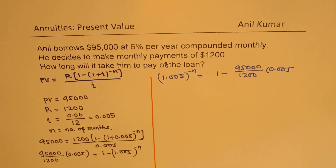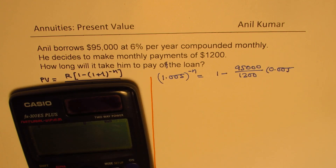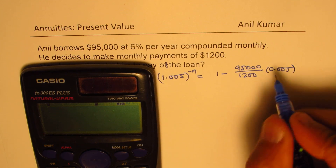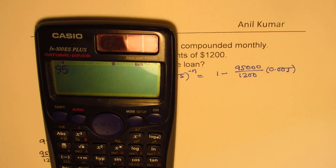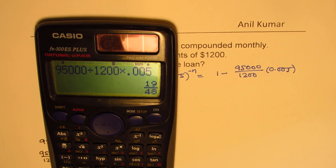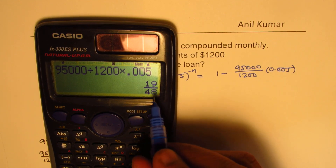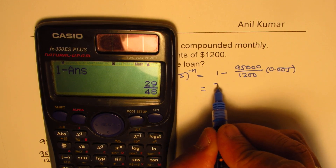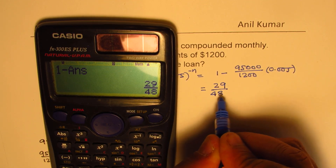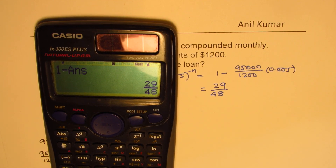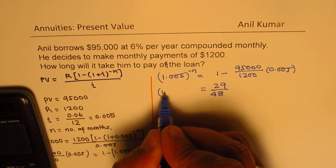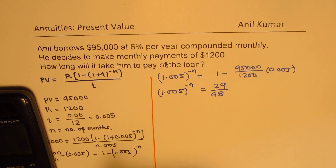Let's calculate this much first, and then we'll see how to use logarithms to find n. I'll calculate 95,000 divided by (1,200 times 0.005) and take that away from 1, which gives us 29 over 48. You really have to be good at using a calculator for such questions. So we have 29/48 equals 1.005 to the power of minus n.